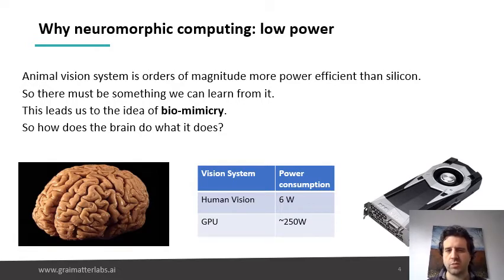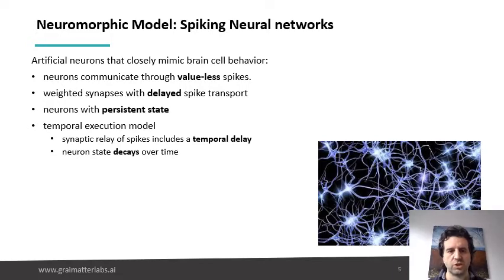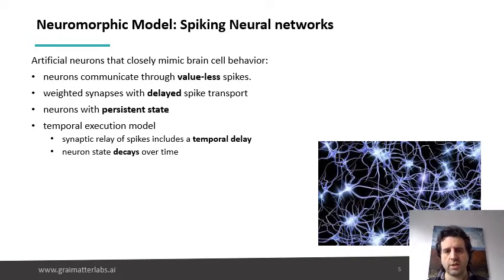So how does the brain do what the brain does? The basic model that is typically proposed to describe the structure of processing in the brain is the so-called spiking neural networks. These are networks of artificial neurons that mimic the brain cell behavior. What they do is that they communicate with each other through valueless spikes.